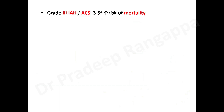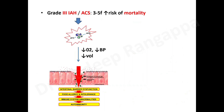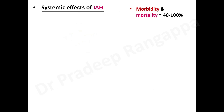Grade 3 intra-abdominal hypertension with pressures more than 20 mmHg associated with abdominal compartment syndrome carries a three to five-fold increase in risk of mortality. There is activation of pro- and anti-inflammatory cytokines, breach of the mucosal gut barrier, leading to hypoxemia, hypotension, hypovolemia, and an overwhelming SIRS response that perpetuates microcirculatory dysfunction, multi-organ failure, and death.